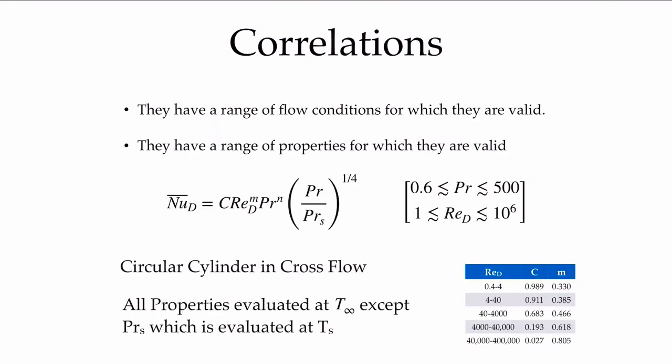So when we use these correlations, we have to think both about the range of properties for which they're valid, those things that are expressed, and the conditions on their use, which relate to the properties like Prandtl number and also the flow conditions.